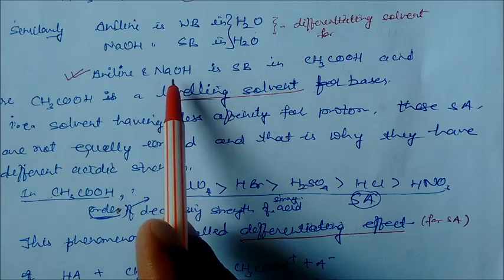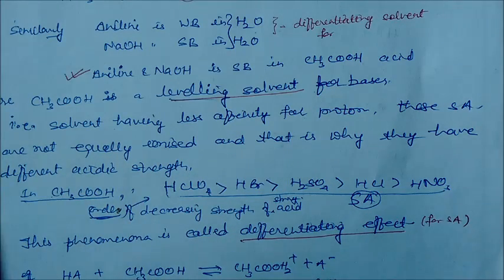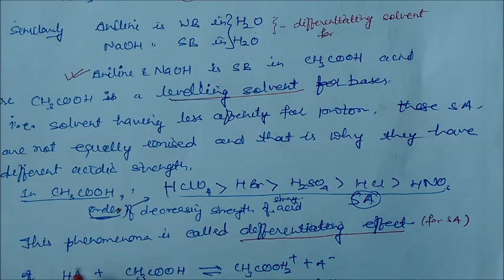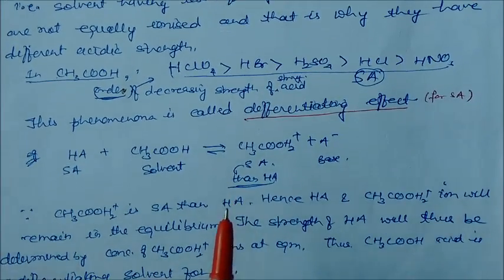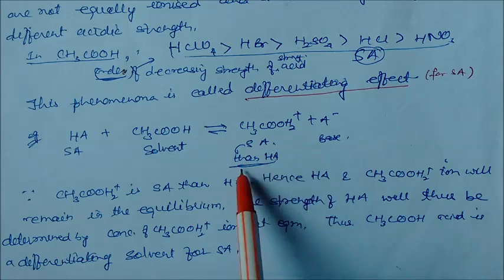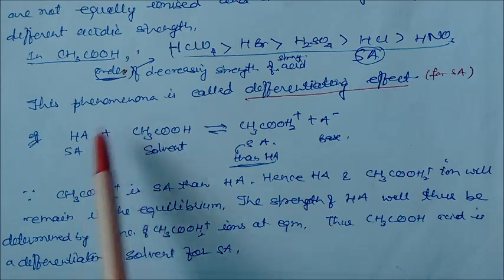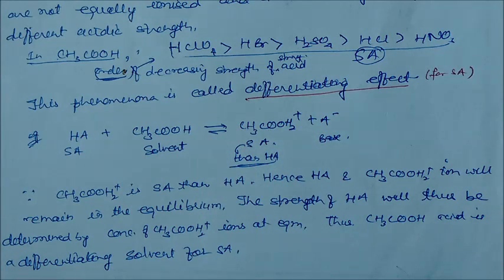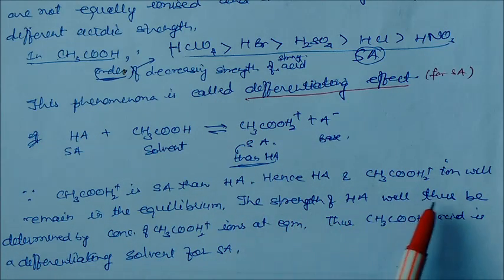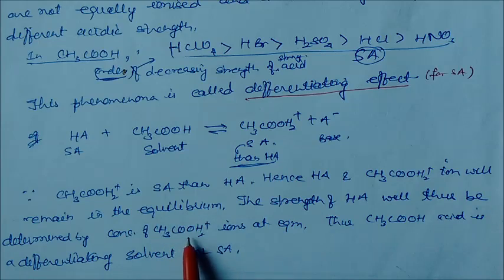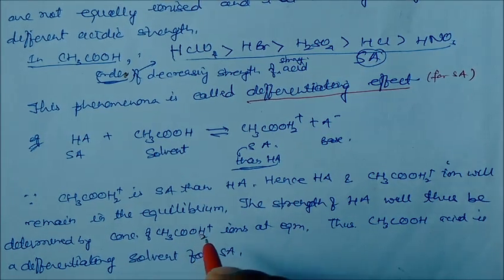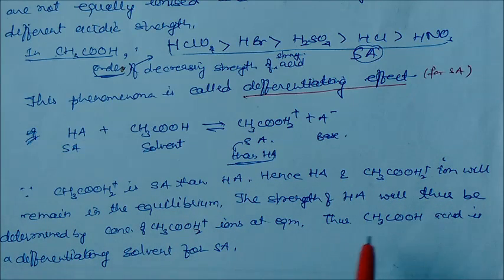For aniline and sodium hydroxide, acetic acid acts as a leveling solvent. In acetic acid, strong acids show a decreasing order of strength — this is the differentiating effect. The solvent produces a conjugate cation stronger than even the strong acids, so HA plus HA remains in equilibrium. The strength of HA is determined by the concentration of CH3COOH2+ ion at equilibrium, confirming acetic acid as a differentiating solvent for strong acids.